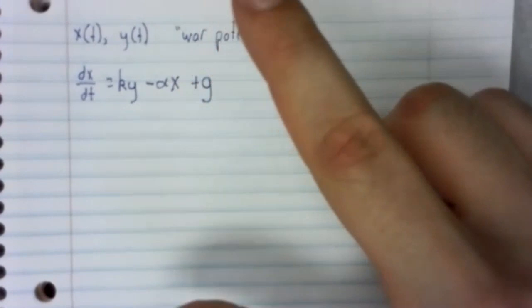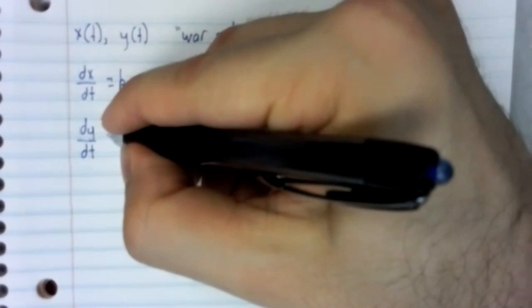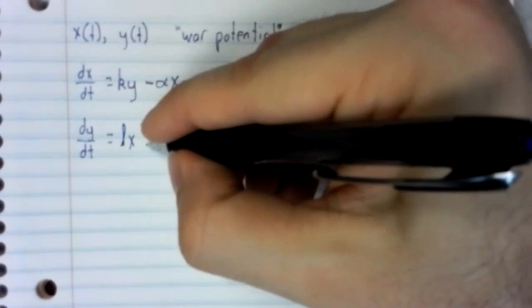The other equation will be parallel. dy/dt equals lx minus beta y plus h.